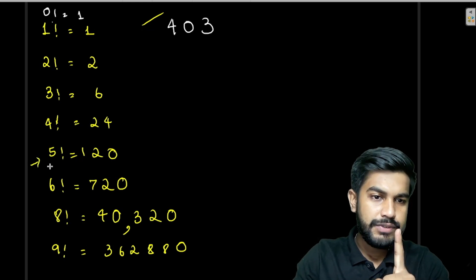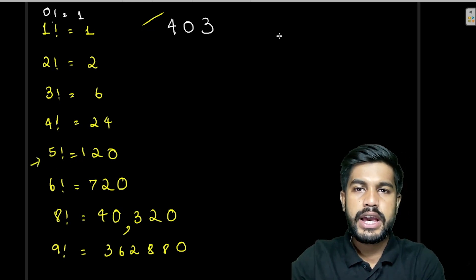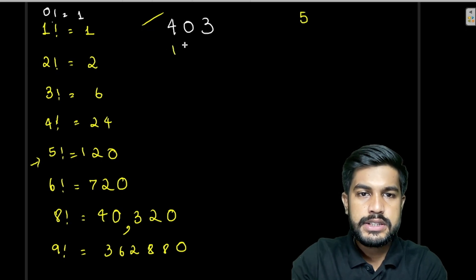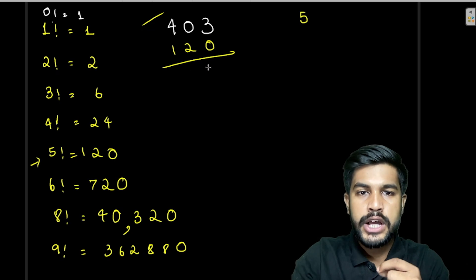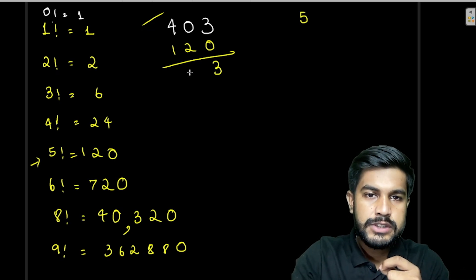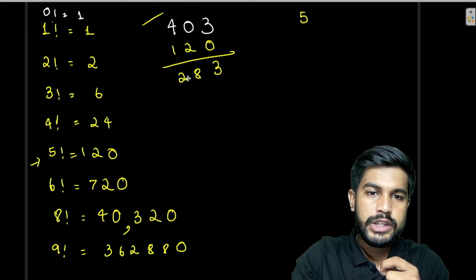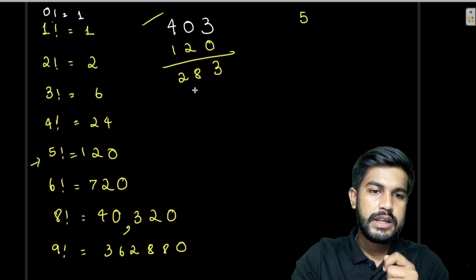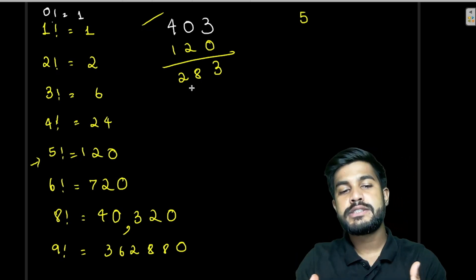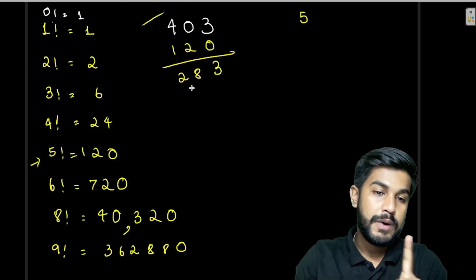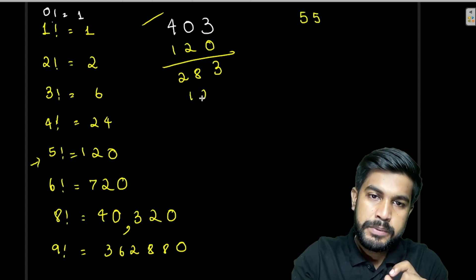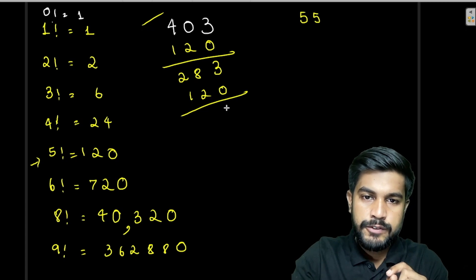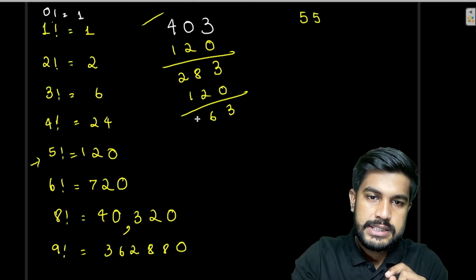Let's build the number 403. The largest factorial block we can accommodate is 5! = 120, so we subtract 120, leaving 283. We place a '5'. We subtract 120 again, leaving 163. We place another '5'. We subtract 120 again, leaving 43. We place another '5'.